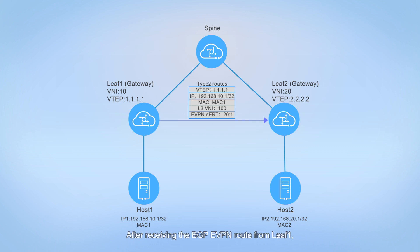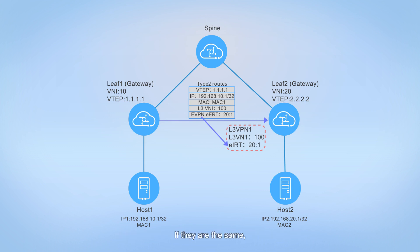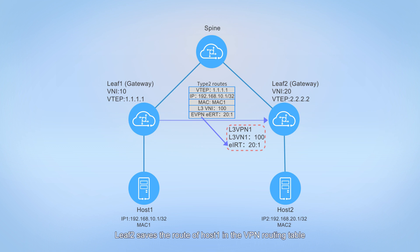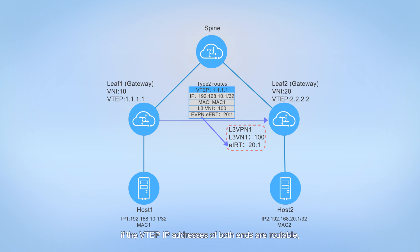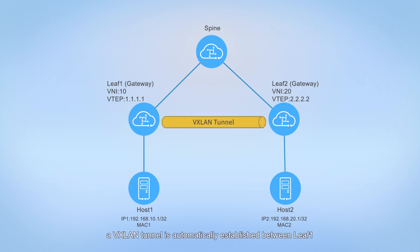After receiving the BGP eVPN route from leaf 1, leaf 2 checks whether the outbound RT value carried in the route is the same as the inbound RT value of the local VPN. If they are the same, leaf 2 saves the route of host 1 in the VPN routing table based on the host IP address, MAC address, and layer 3 VNI information. In addition, if the VTEP IP addresses of both ends are routable, a VXLAN tunnel destined for the remote end is established. In this case, a VXLAN tunnel is automatically established between leaf 1 and leaf 2 through BGP eVPN.